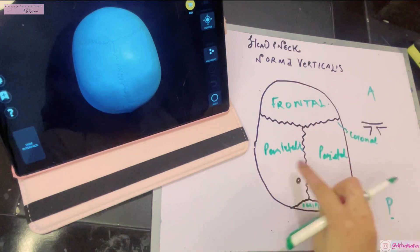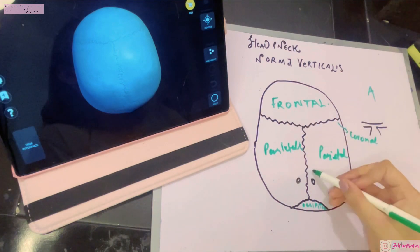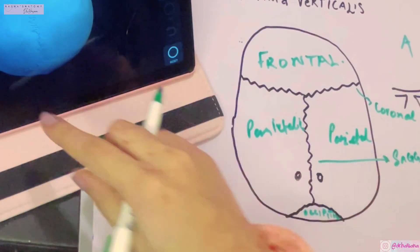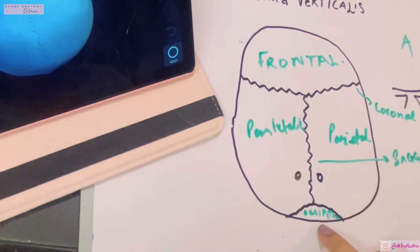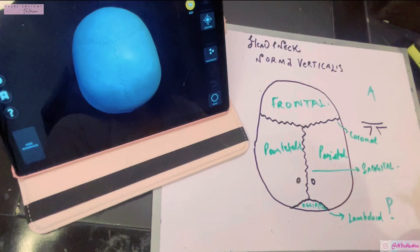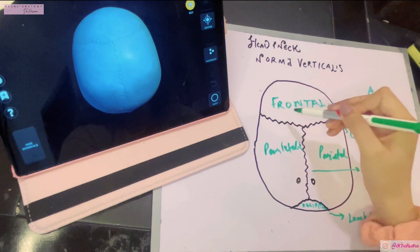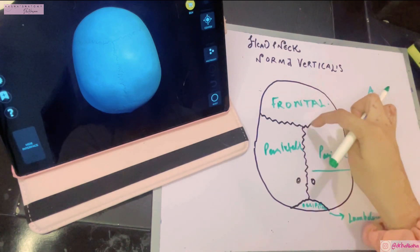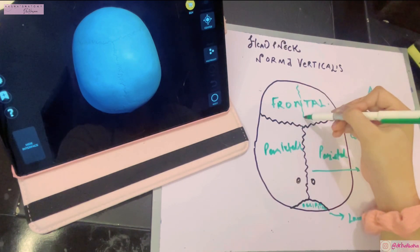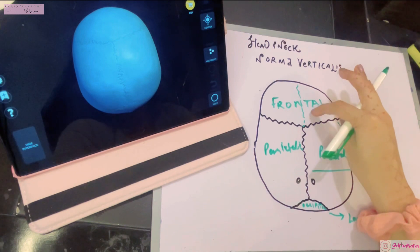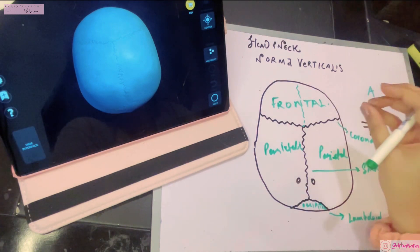Then we have the next suture between the occipital bone and the two parietal bones. This is known as the lambdoid suture. Now let's talk about some other important parts about the norma verticalis. You can see another suture in the frontal bone where two frontal bones are meeting in midline. This is known as the metopic suture. However, this is only present in three to eight percent of individuals, which is not a lot.